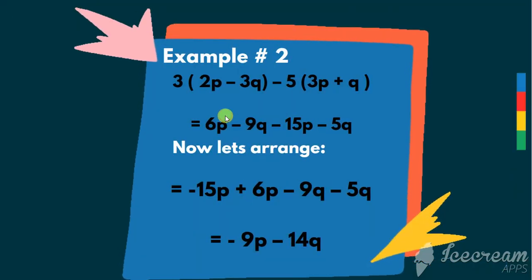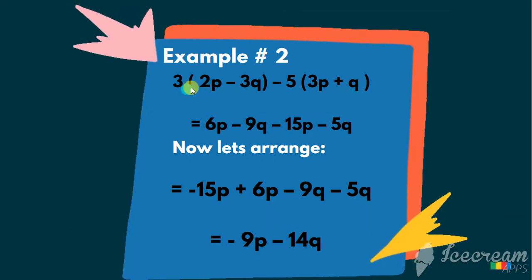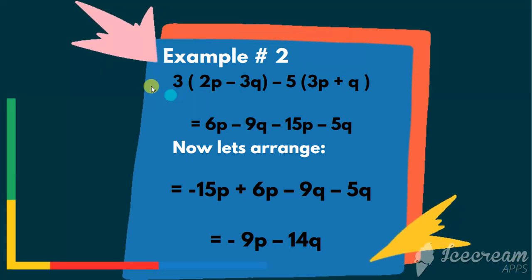Now let's multiply. 3 times 2s are 6. Plus plus will be plus. 3 times 3s are 9. And plus minus will be minus.